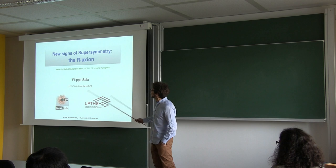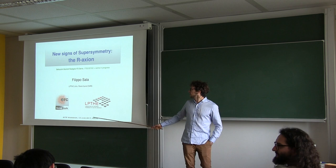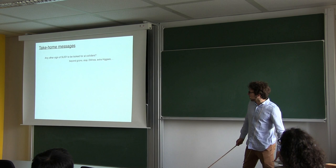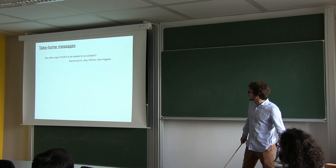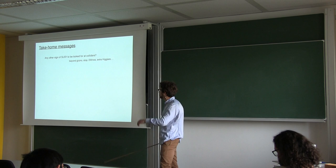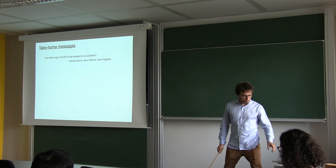their action as a new way to look for supersymmetry, and this is based on work with Brando and Javi that are here, Alberto Mariotti in Brussels, and Diego Redicolo at Weizmann in Tel Aviv. As I usually do in short conferences, I start with the take-home message. The take-home message is, I was trying to answer this question: is there any other sign of supersymmetry to be looked for at colliders, not only the LHC, other than the usual ones like gluinos, stops, etc., that were mostly motivated by naturalness?